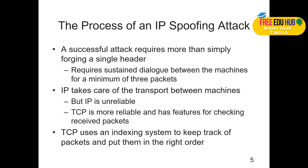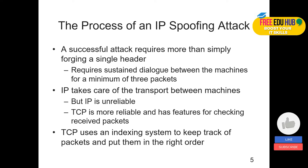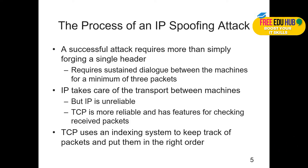That is why TCP is considered more reliable and has features for checking and receiving. IP takes care of transfer between machines but is unreliable. One computer can have an IP assigned by DHCP, and another computer might receive the same IP later. The PC changes but the IP remains the same, because each IP address has a lease time. If that computer goes offline, DHCP can issue the same IP address to any other computer.